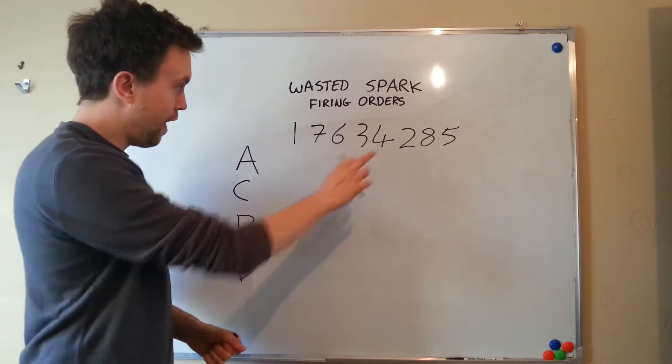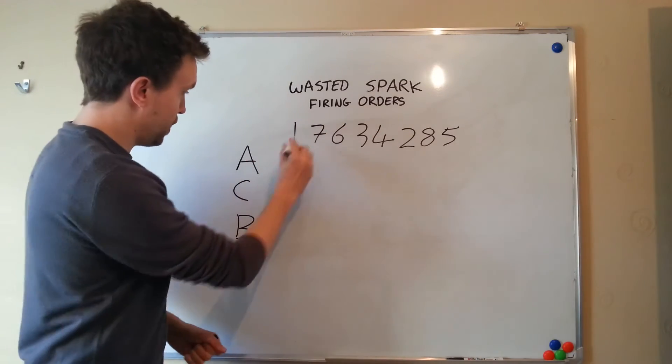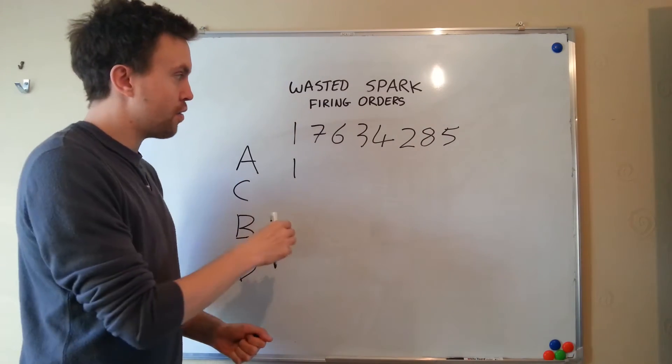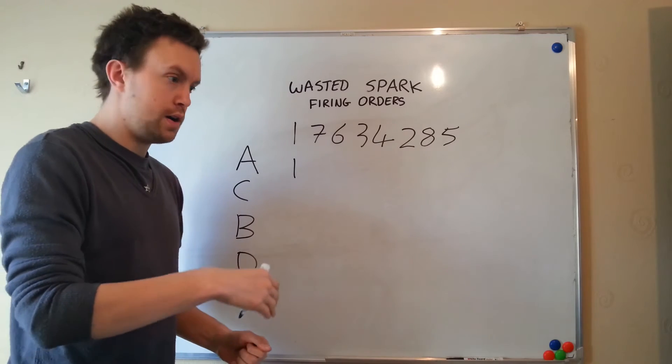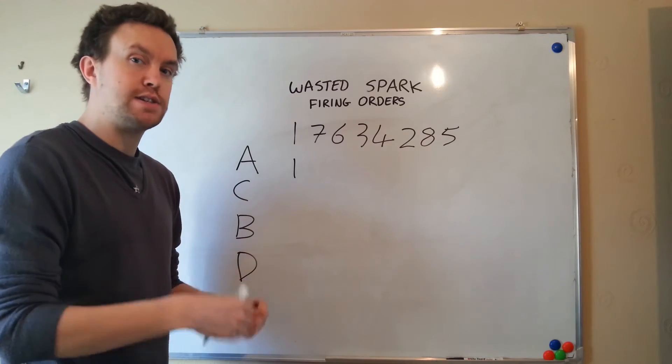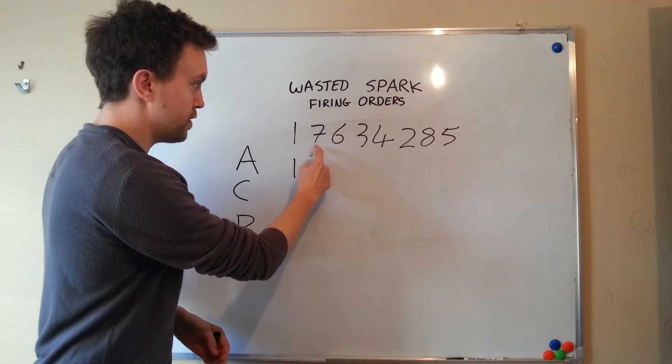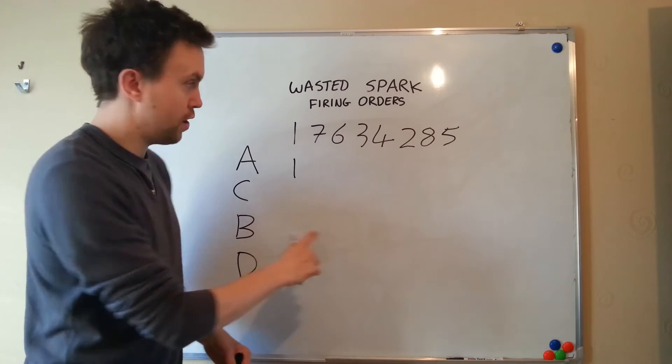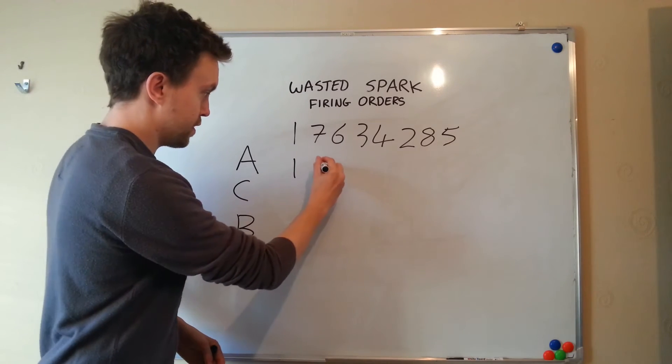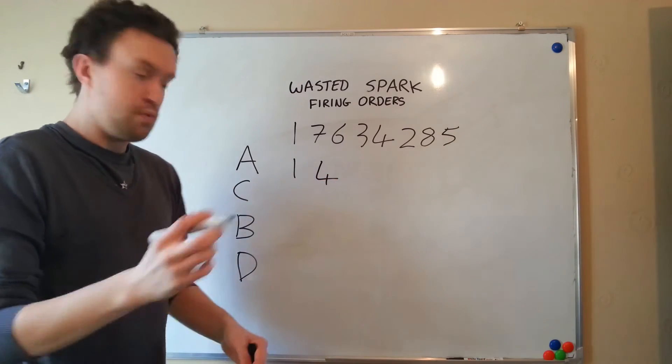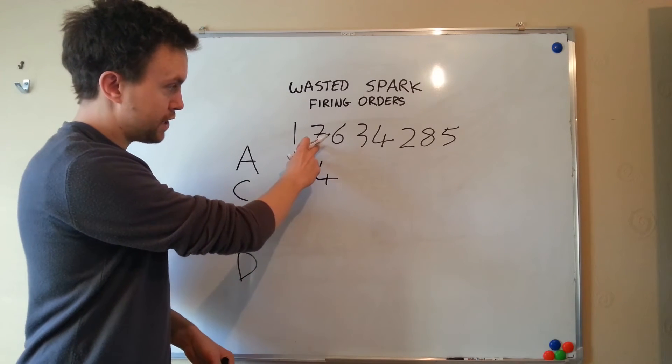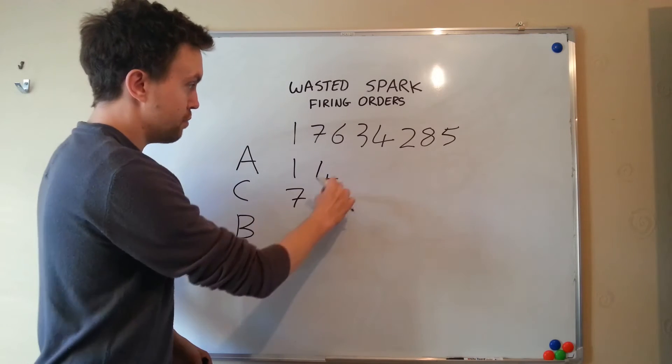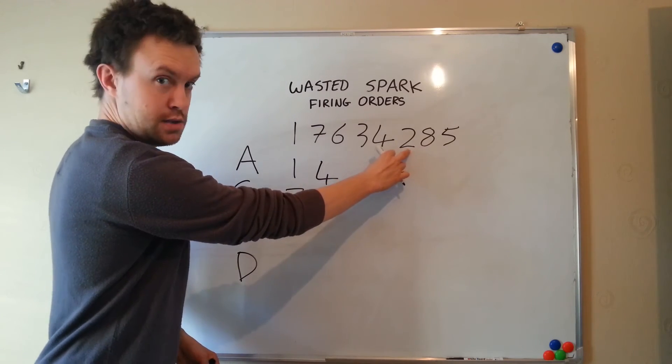So what we need to do now is look at our firing order and we're going to write number one next to A. So after we've written down number one next to coil A, what we're going to do is we're going to move four cylinders or 360 degrees in the engine cycle along. So we're going to go one, two, three, four, move along to this gap here. We can see that also on coil A should be cylinder four. We're now going to go to coil C and we're going to look at the next one. So first we're going to write down seven and C. Again, we're going to make that same jump moving from what was four next to it to number two.